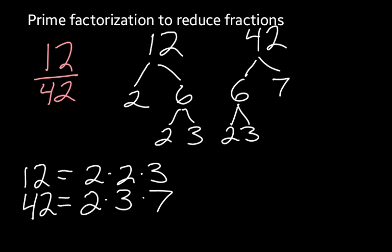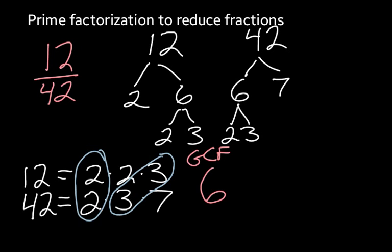Now looking at these sets of prime factors, I want to look and see what's common between them. I notice that I have a 2 that's shared, and I have a 3 that's shared, and I don't have anything else that's in both of them. So now if I take those two prime factors and multiply them 2 times 3, that gives me a greatest common factor of 6. Greatest common factor is the largest number that goes into both 12 and 42.